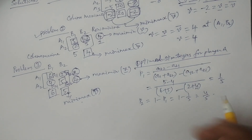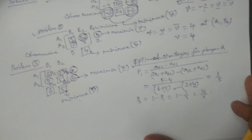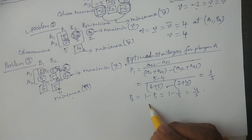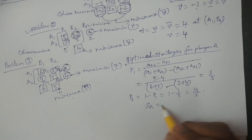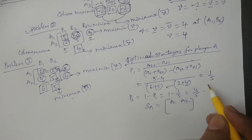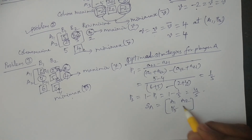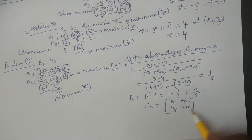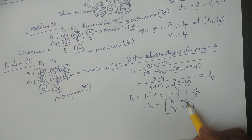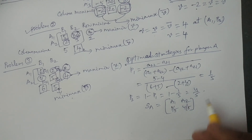The optimal strategies for player A are written as: SA equals {A1, A2; P1, P2} equals {A1, A2; 1/5, 4/5}. Since 4/5 is the greater probability, player A relies more on and should use strategy A2.